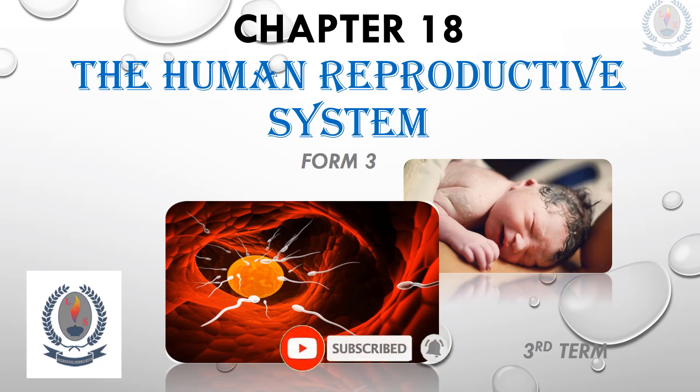Hello, my dear children. Hope you all are safe. Today our lesson is the human reproductive system, third term, Form 3, Chapter 18. In this chapter we are going to learn about both the male and female reproductive system, including the menstrual cycle, fertilization, and fetal development.